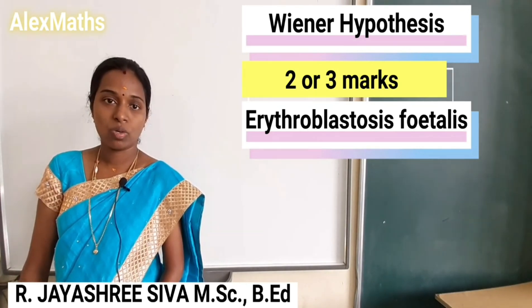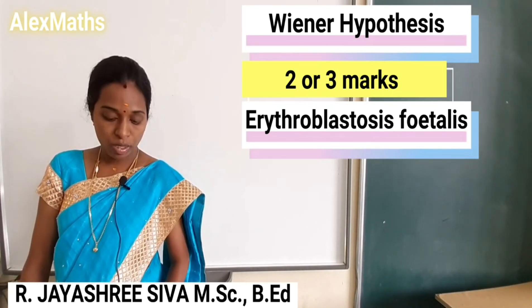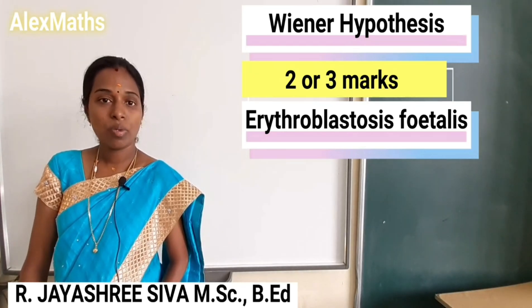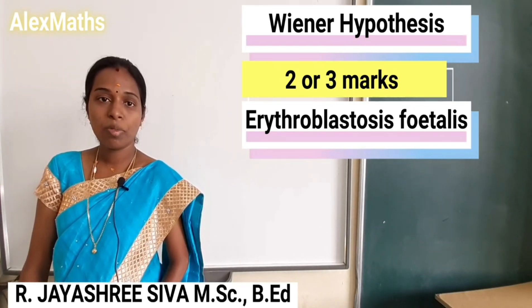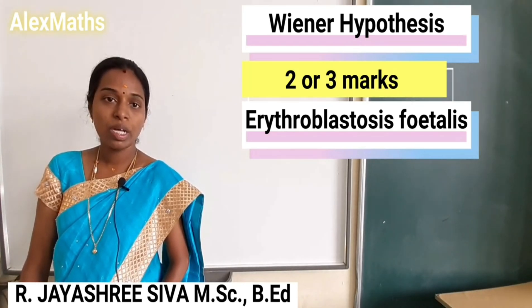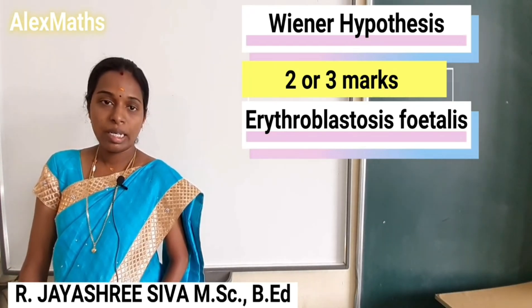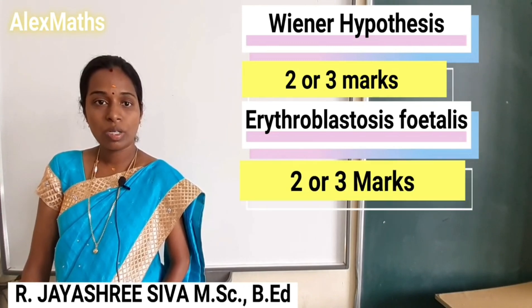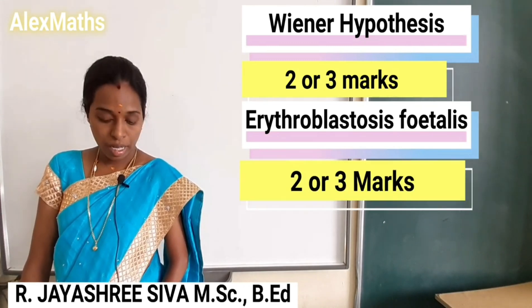This describes the reactions of Erythroblastosis Fetalis. This question on ABO blood group is worth 2 or 3 marks.